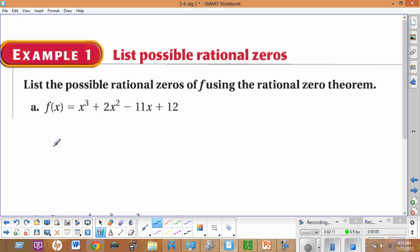In our example, example one, we're going to list the possible rational zeros, and then we're going to use them to illustrate the upper and lower bound rules. So let's write this function down: f(x) equals x^3 plus 2x^2 minus 11x plus 12.